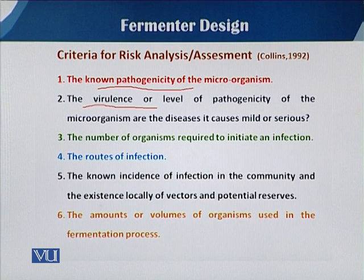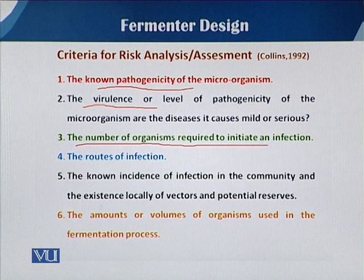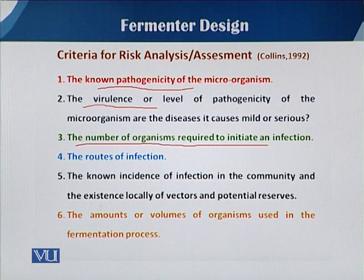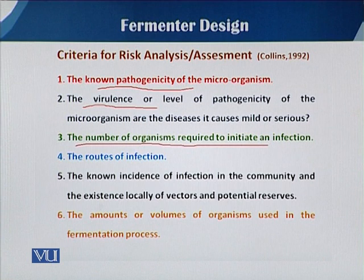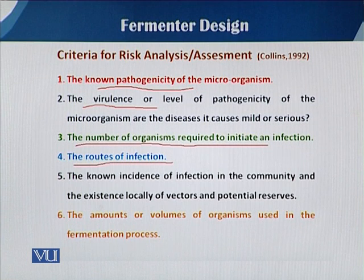The third criterion is the number of organisms required to initiate an infection. If the organism is pathogenic and the level of virulence is very serious, we should know how many cells are required to initiate the infection. For example, with Salmonella, even one or two cells are sufficient to start the disease. The fourth criterion is the route of infection — whether it is through direct blood contact, inhalation of air, food items, etc. We must know the route by which that organism causes disease.